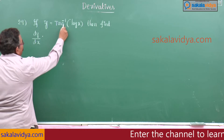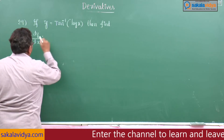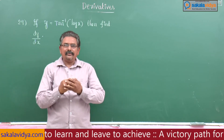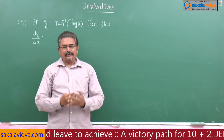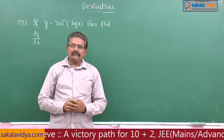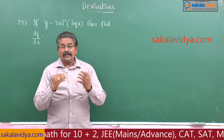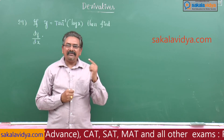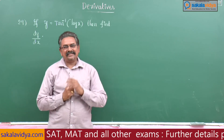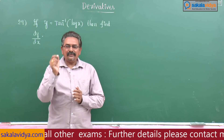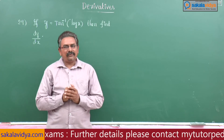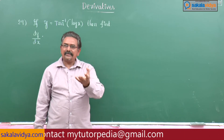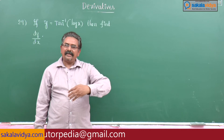If y is equal to tan inverse of log x, then find dy by dx. In this problem, let log x equal u, so the problem becomes y equal to tan inverse u. The derivative of tan inverse u is 1 by (1 plus u square) into du by dx. If you know this formula, this problem can be solved easily.